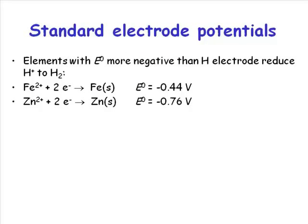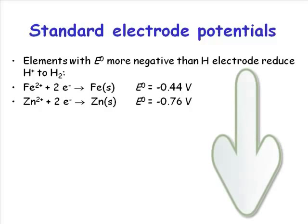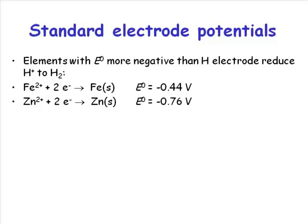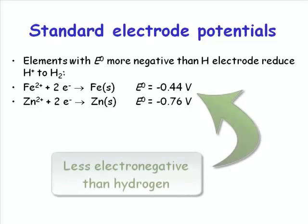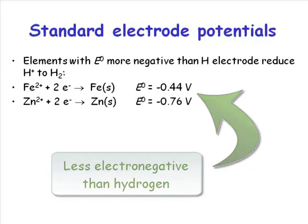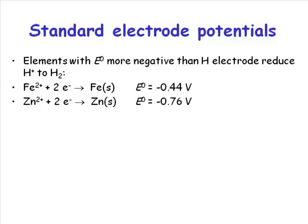What good are these things? If you have an element with a standard reduction potential that is lower than hydrogen, that tells you that element is less electronegative than hydrogen — it has less pulling power for electrons than hydrogen does — which will translate into a greater tendency for that element to lose electrons.